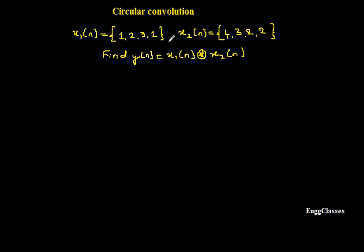1, and x2 of n, which is 4, 3, 2, 2. The task is to find its convolution, which is y of n, given as x1 of n circularly convolved with x2 of n. I would recommend you to watch this video till end, so that we will explore how to find circular convolution.